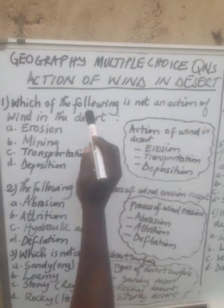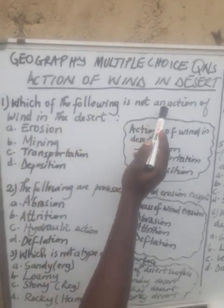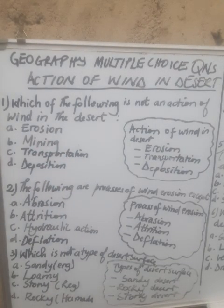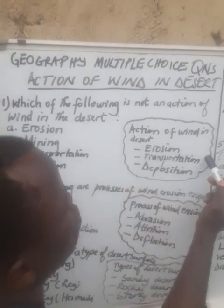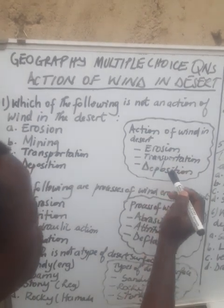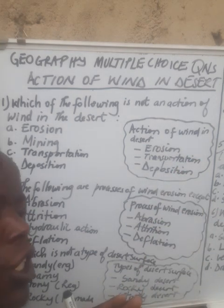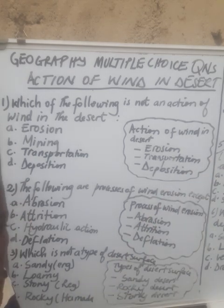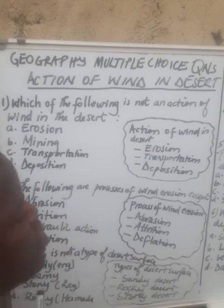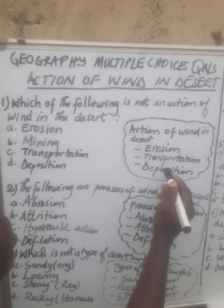Question number one is asking: which of the following is NOT an action of wind in the desert? They give us different options and want us to choose which one is not an action of wind. Normally we have three main actions of wind in desert. Wind performs erosion, transportation, and deposition. With erosion, wind destroys materials in the desert. After destroying those materials, wind will transport them, and when the strength of wind decreases, wind starts to lay down those eroded materials — that is deposition.